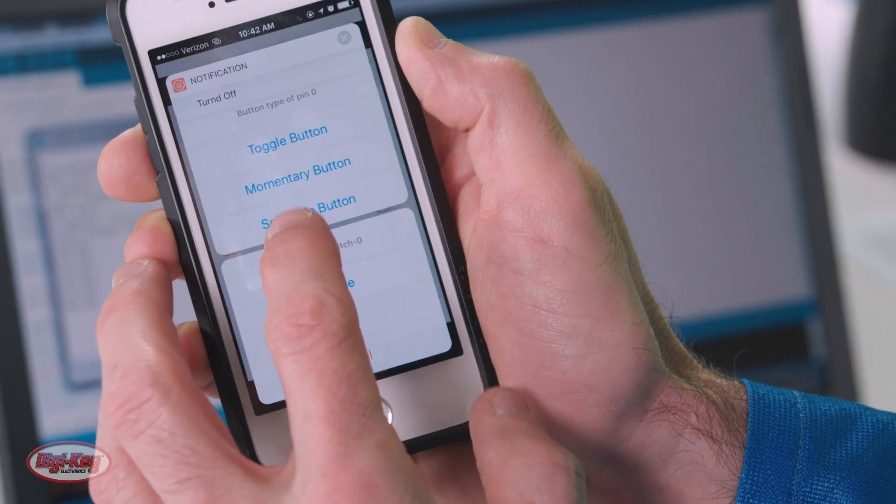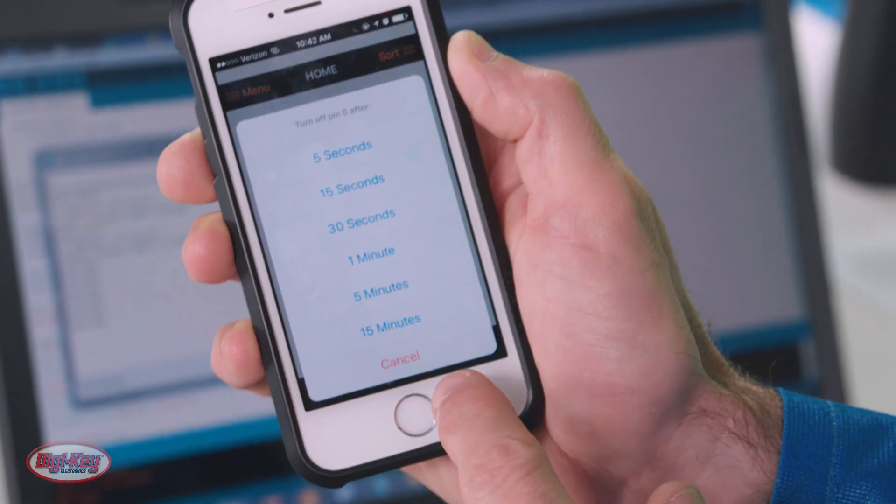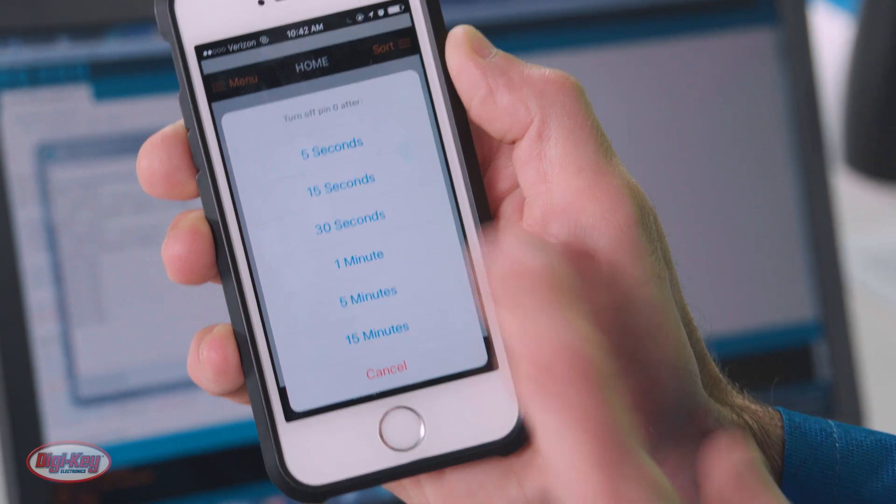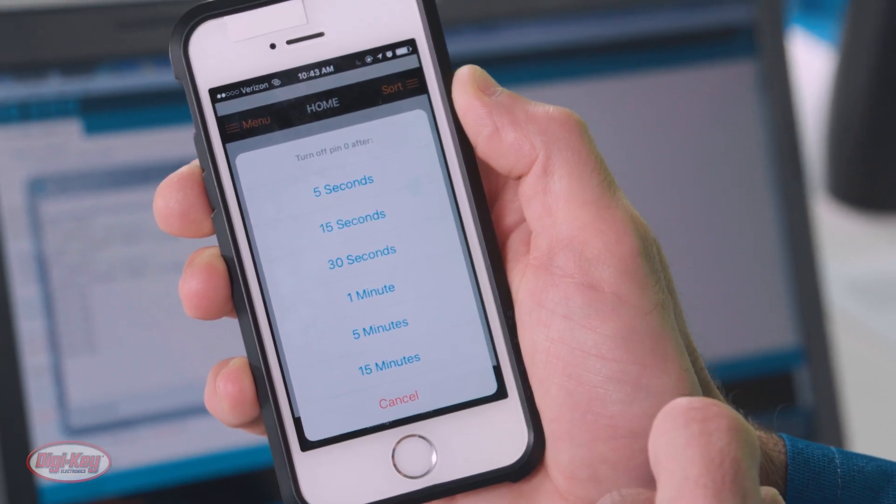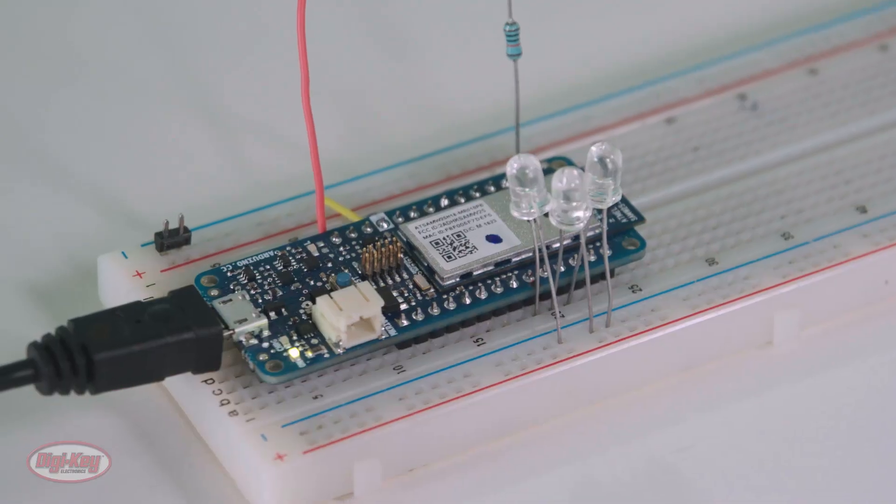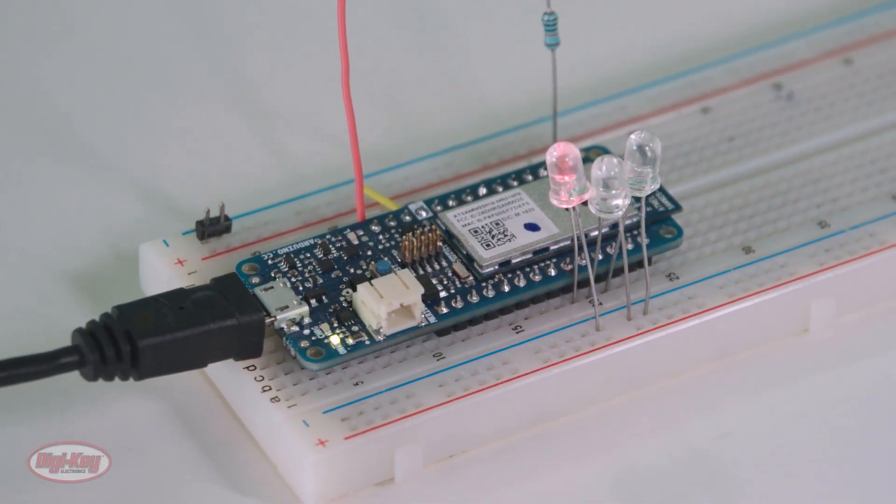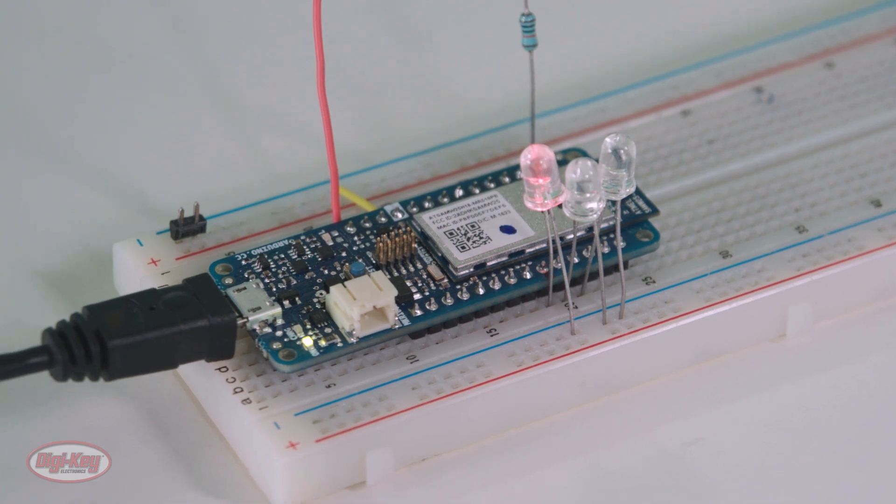Or we can do a schedule button. So you turn this on, and then you can determine or set the amount of time you want it on. So we'll go five seconds. And then the LED should be on for five seconds, and then it turns off.